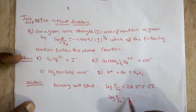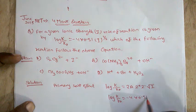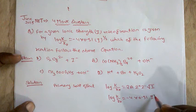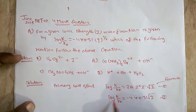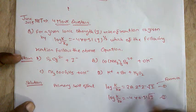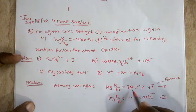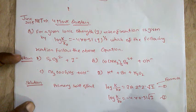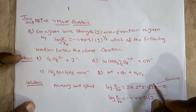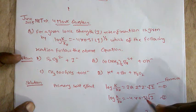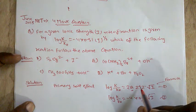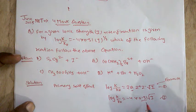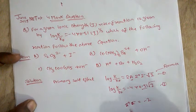Comparing the two equations: the given equation has minus 4 into 0.51 into root i. The root i terms cancel. 0.51 is your A value, and the remaining coefficient gives 2 times z+ times z- equal to minus 4. When the 2 cancels, you get z+ times z- equal to minus 2.